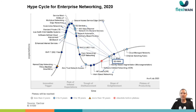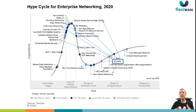Looking at the Gartner hype cycle for enterprise networking, we see SD-WAN at a mature place over the slope, but we see many other technologies in different locations over the slope, and there are more technologies that will come — similar to how SASE came and very quickly climbed up to the top of the hype cycle. When you have a closed system, each one of these technology changes requires you to completely do a forklift and change your system. With an open system like FlexiWAN, you can keep the hardware, keep the networking layer, and add new technologies like SASE and many other capabilities into the system without completely replacing it.